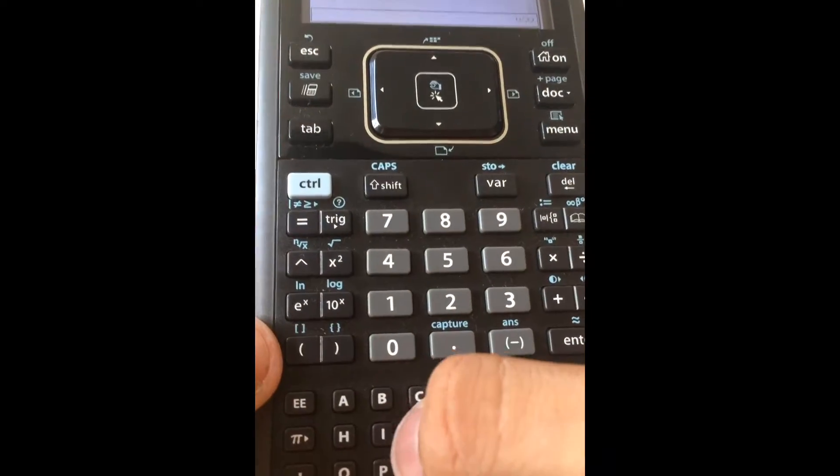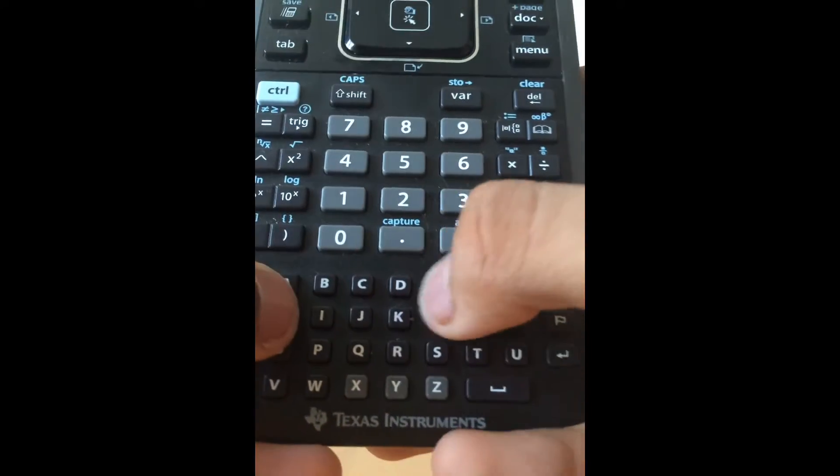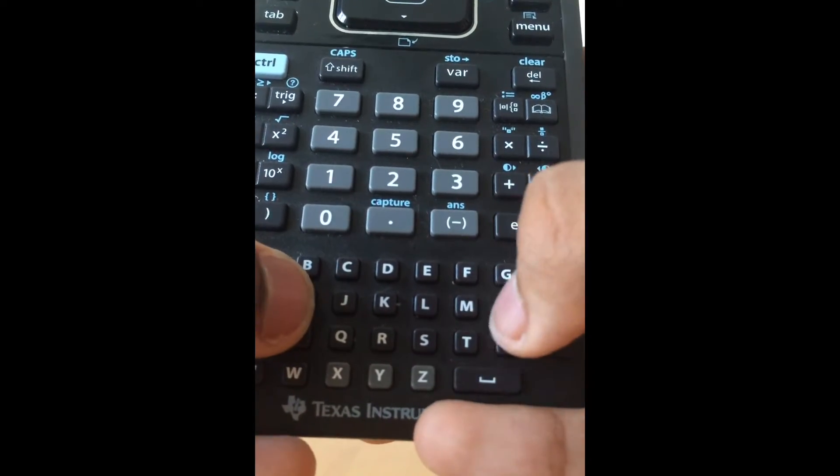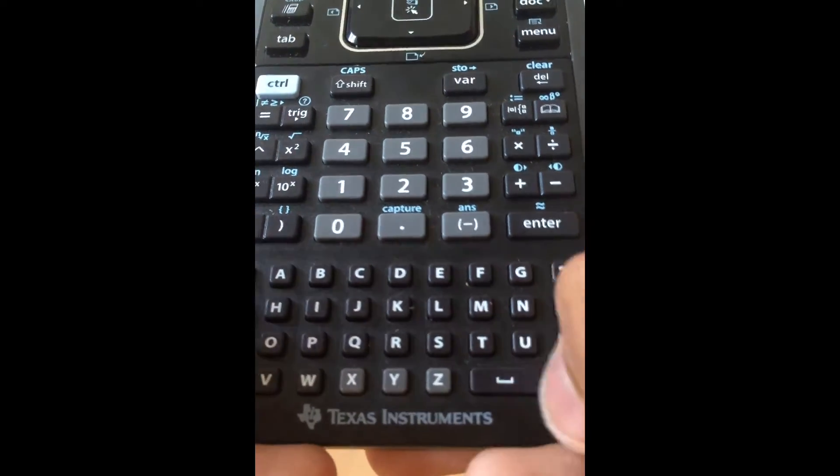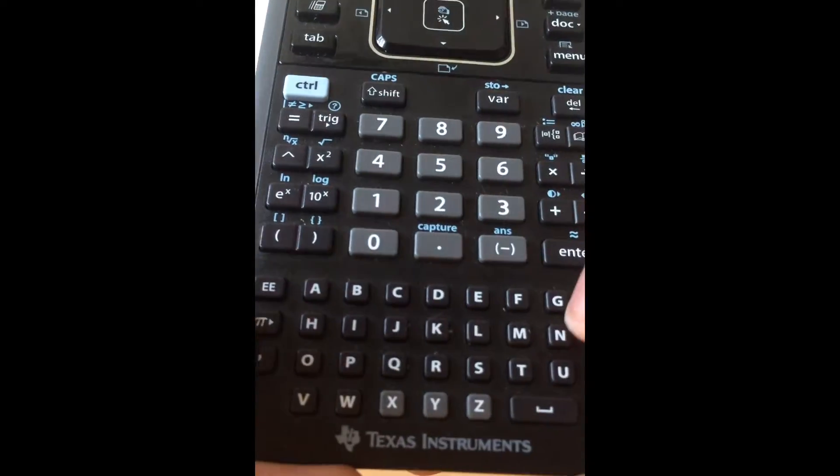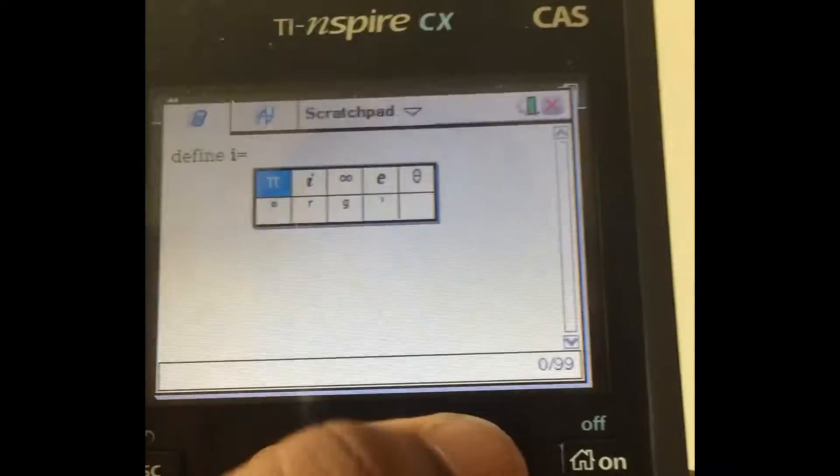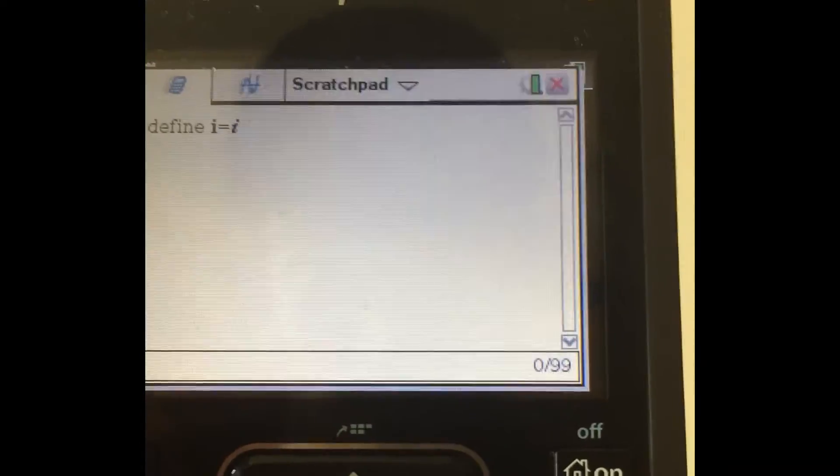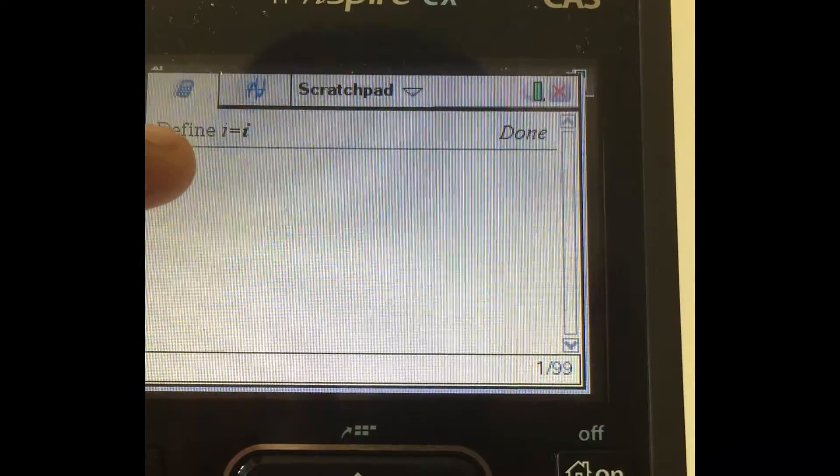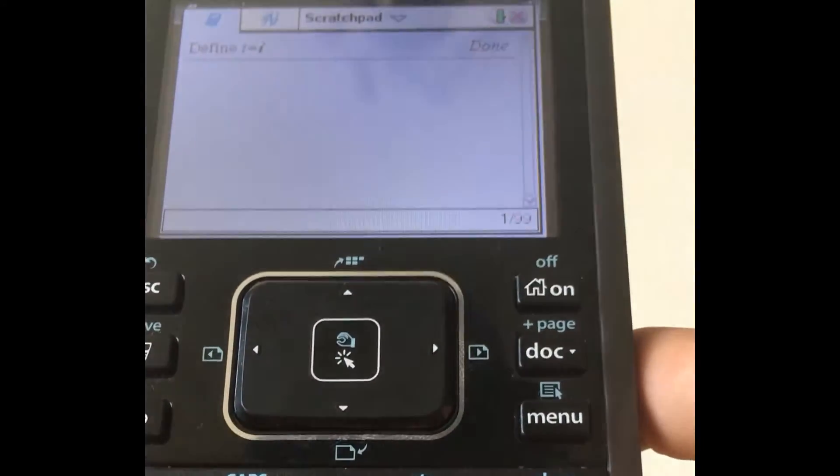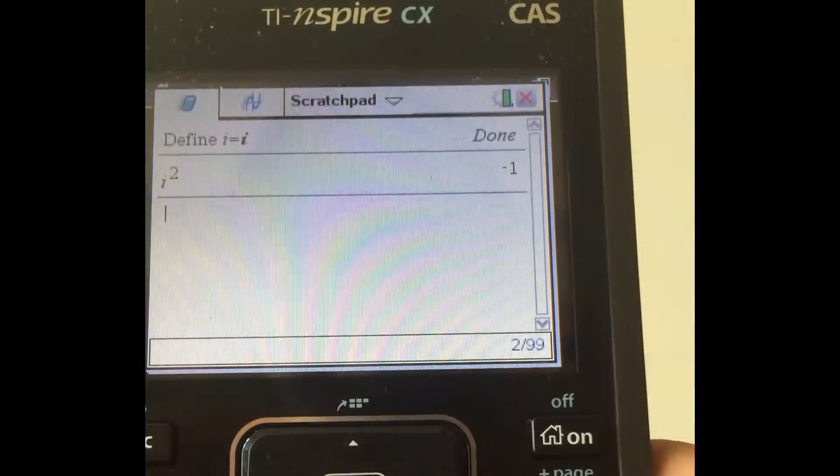However, you can make this i work as i. But to do that, what you have to do is type define and then space i and then equals and then i, the actual i. So when you do this, it sets the value of this i to i. So what happens now is you can use this as the normal i, so it works.